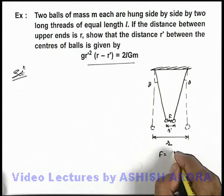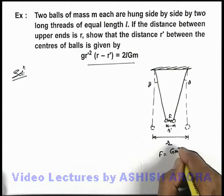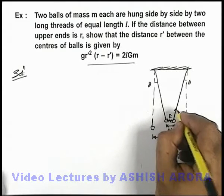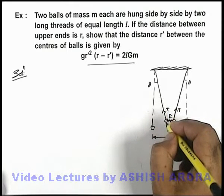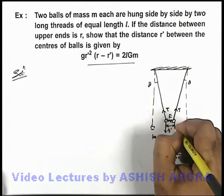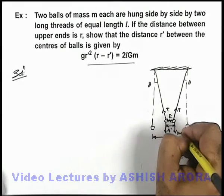The value of gravitational force here can be written as G m² by r'². The tension in the strings would be T. In this situation, the weight of the two balls will also act in downward direction, that is mg.